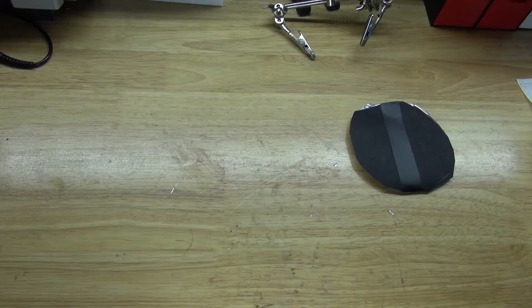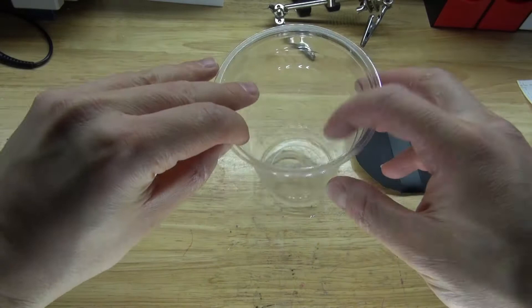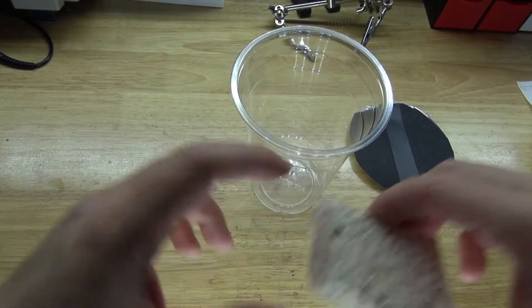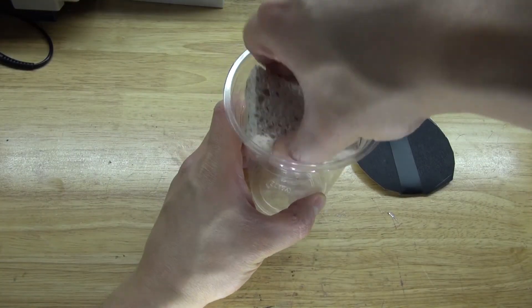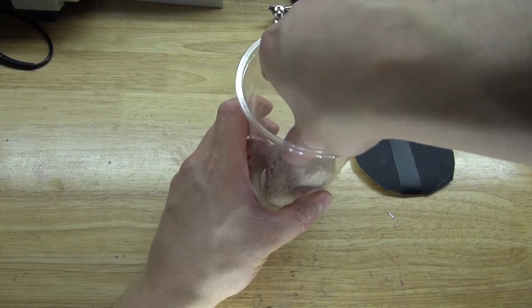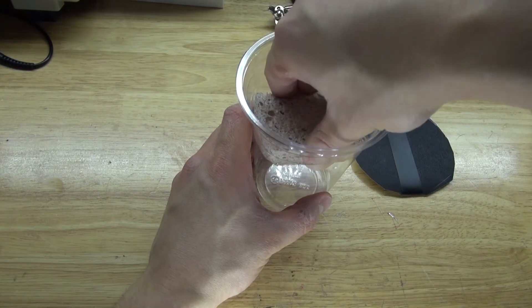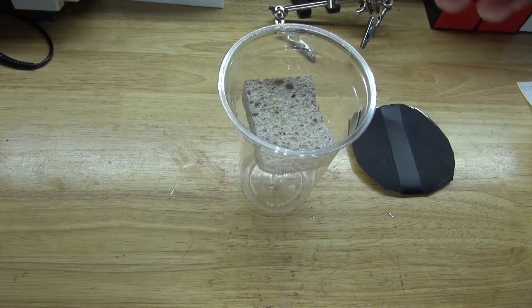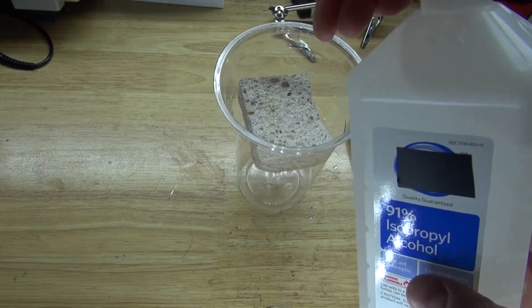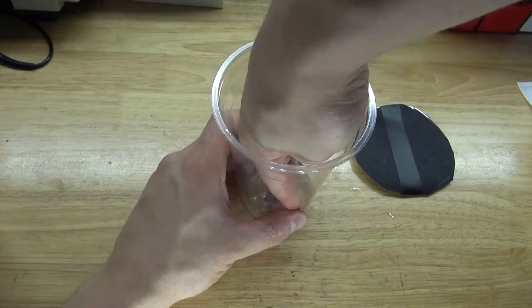And now I'm going to take this plastic cup. Take this dry sponge, place it in the bottom of this cup. Pour some isopropyl alcohol to soften the sponge and to soak up the isopropyl alcohol.